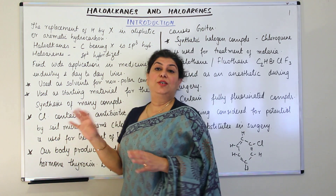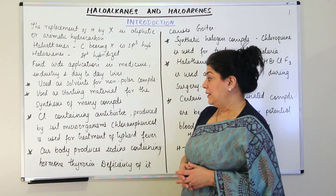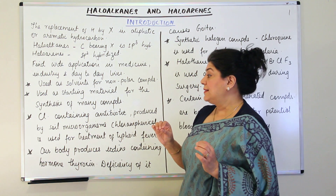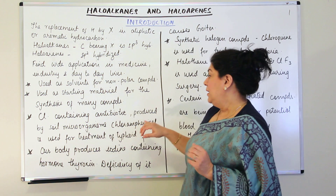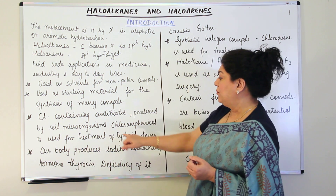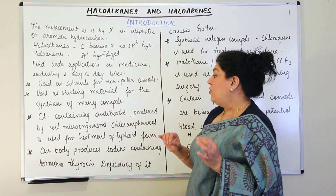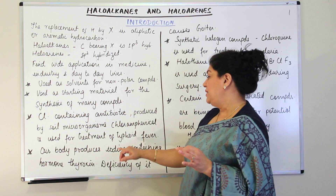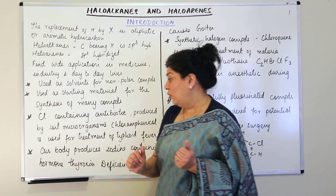The third use: there is a chlorine-containing antibiotic produced by soil microorganisms called chloramphenicol. Chloramphenicol is an antibiotic used in the treatment of typhoid fever, showing that haloalkanes are also used in medicine.